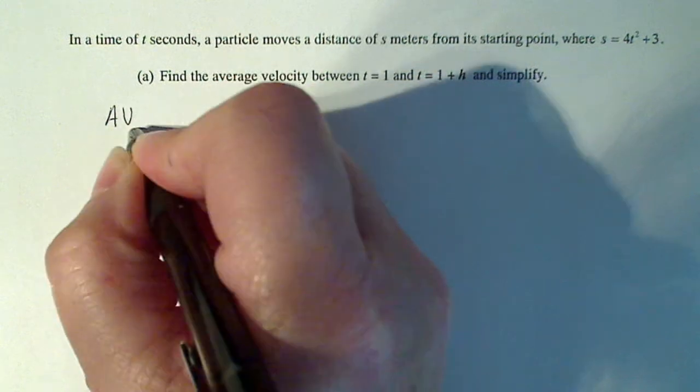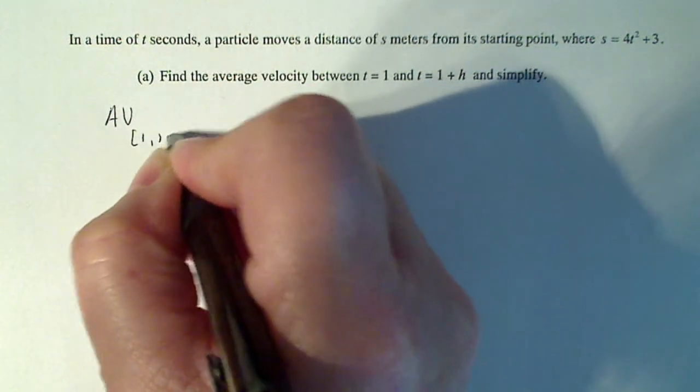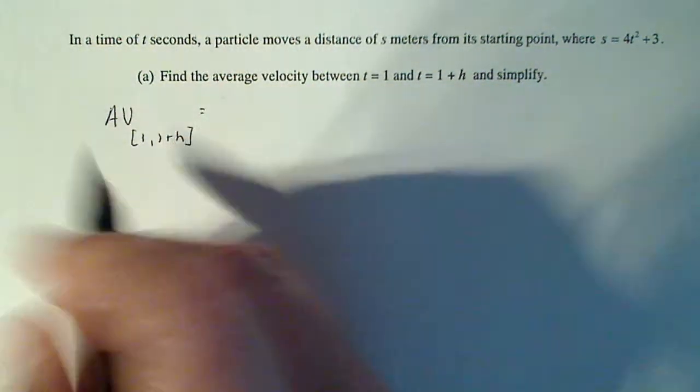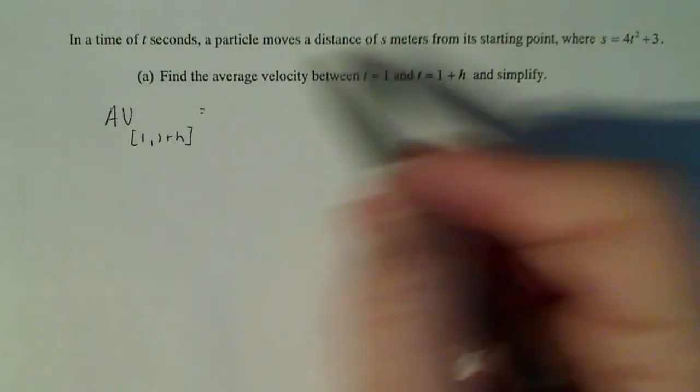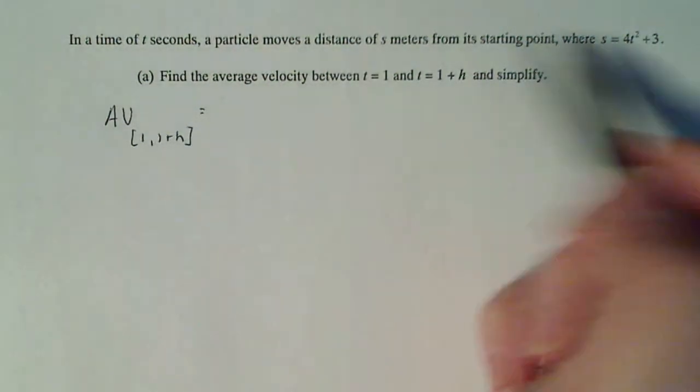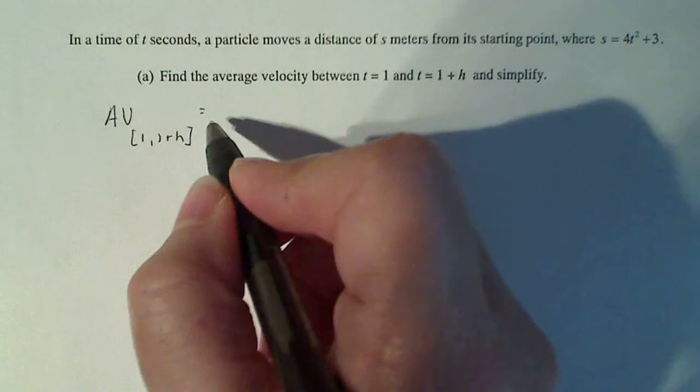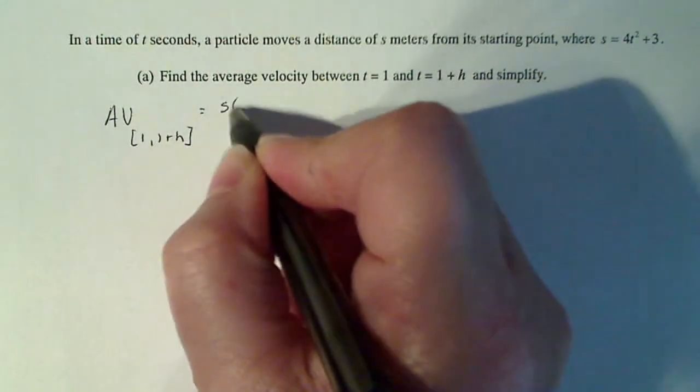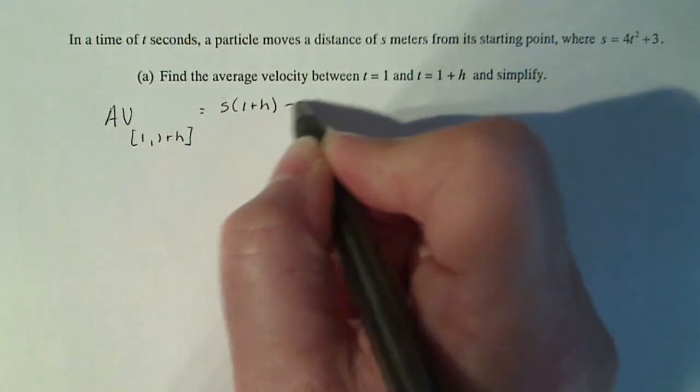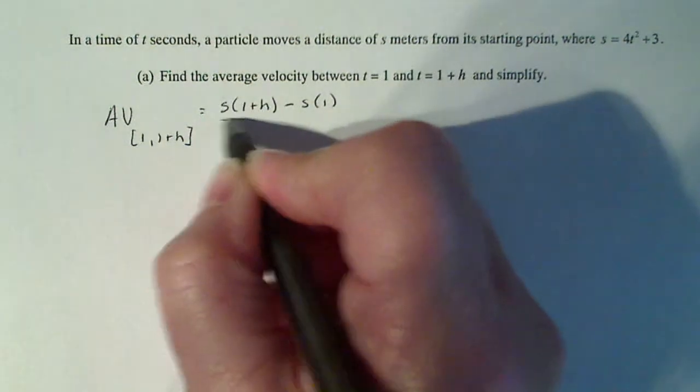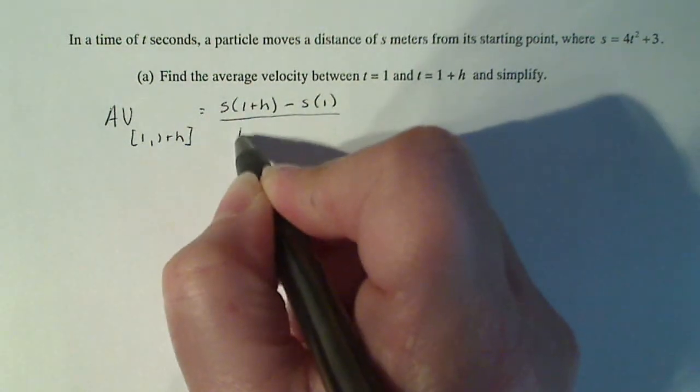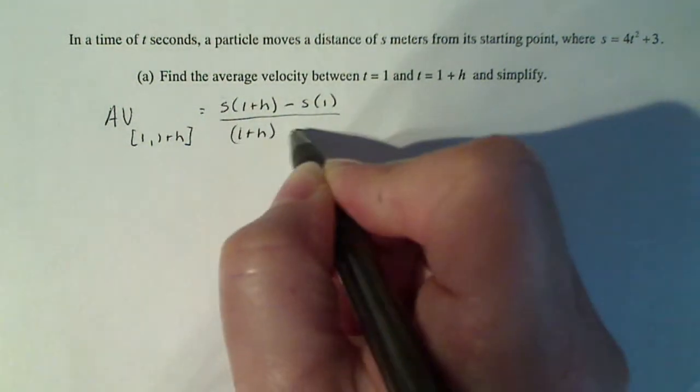So my average velocity from 1 to 1 plus h is just the rate of change between these two x values with this function. So the numerator is going to be s of 1 plus h minus s of 1, all over 1 plus h minus 1.